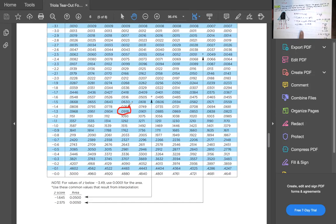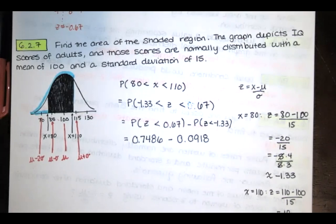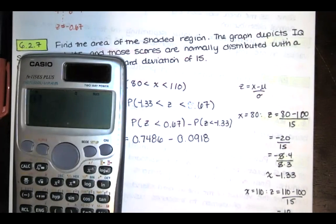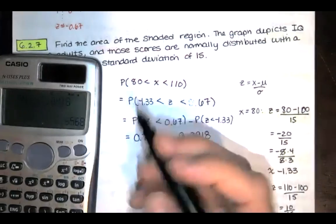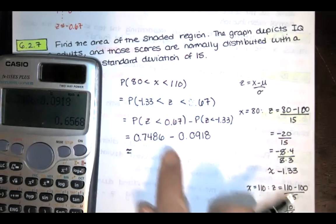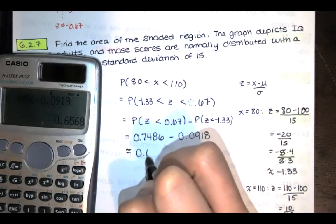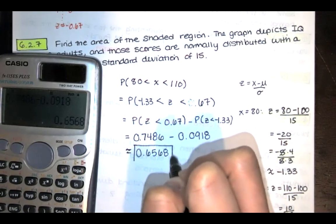If you subtract those two guys, you're going to get the probability that our x values lie between 80 and 110, or alternatively, the probability that someone, a randomly selected person, has an IQ score between 80 and 110, which is the same as the probability that z is between one of these two standard z-scores, or these two z-scores, which are standardized values of that x. Let's work that out. 0.7486 minus 0.0918 equals, we get approximately, well, I get exactly this, but these probabilities from the table are approximate. 0.6568.